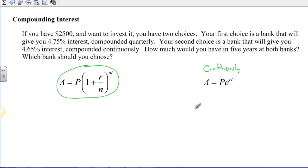And so here's our situation. It says if we have $2,500, you want to invest it, you have two choices. The first choice is a bank that will give you 4.75% interest compounded quarterly. That's four times per year. Your second choice is a bank that gives you 4.65% interest compounded continuously. How much would you have in five years in both banks? So for bank one, we're going to use this formula here because we know that the interest rate is 4.75. That's .0475. We're compounding quarterly. That's four times per year. We were doing it for five years. That's five for T. And the amount that we're investing is $2,500.